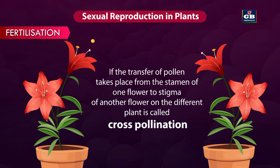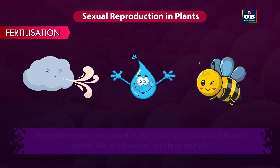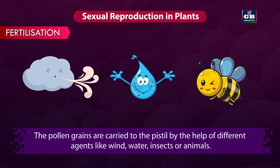If the transfer of pollen takes place from the stamen of one flower to the stigma of another flower on a different plant, it is called cross-pollination. The pollen grains are carried to the pistil by the help of different agents like wind, water, insects, or animals.